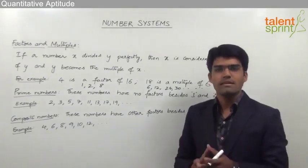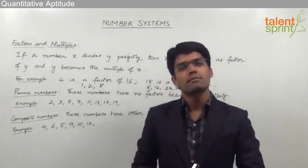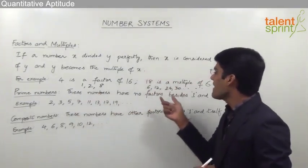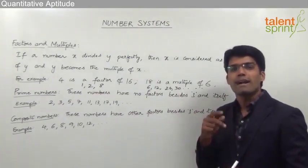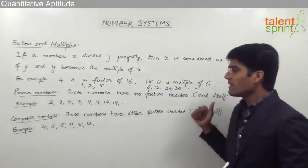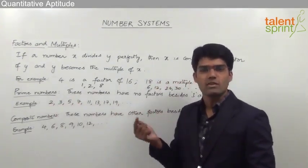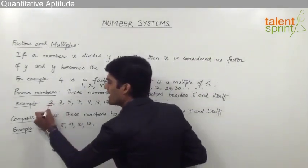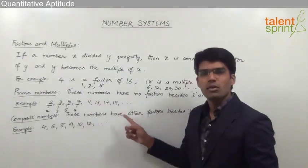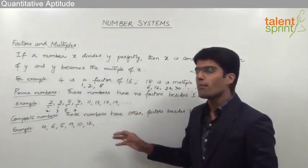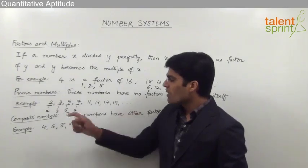Based on the number of factors, all natural numbers except 1 can be classified as either a prime number or a composite number. Prime numbers are those numbers which have no factors besides 1 and itself — that is, they have only 2 factors. Examples of prime numbers are 2, 3, 5, 7, 11 and so on. For example, the factors of 2 are 1 and 2; factors of 3 are 1 and 3; for 5, it is 1 and 5; for 7, it is 1 and 7. These numbers are divisible only by 1 and by the number itself.